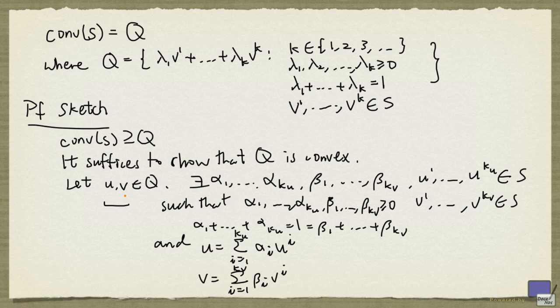So we want to show that the line segment between U and V is contained in Q. Now, if we take Z to be from the line segment between U and V, then we can write Z as (1 minus λ) times U plus λ times V. And we want to show that Z is also in Q.